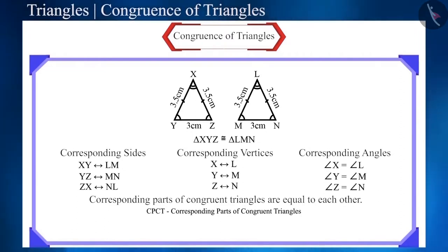Note an important point here, that triangle XYZ is congruent to triangle LMN. But, if we write this as triangle XYZ is congruent to triangle MNL, then it would be wrong, because there is a one-to-one correspondence between both the triangles.